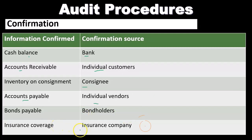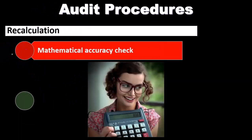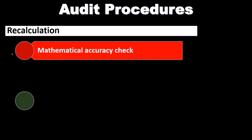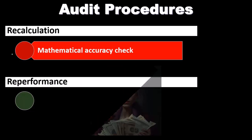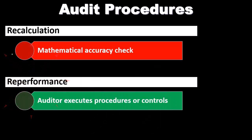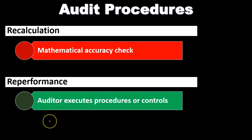Recalculation is another audit procedure where we check mathematical accuracy. For example, with depreciation or the allowance for doubtful accounts, we go through and recalculate to see if the math is accurate. Re-performance is similar but for more complex procedures — the auditor executes procedures or controls that are a bit more complex than a simple recalculation. We go through those procedures and see if we arrive at the same or similar number, checking whether the process is in alignment with generally accepted accounting principles.